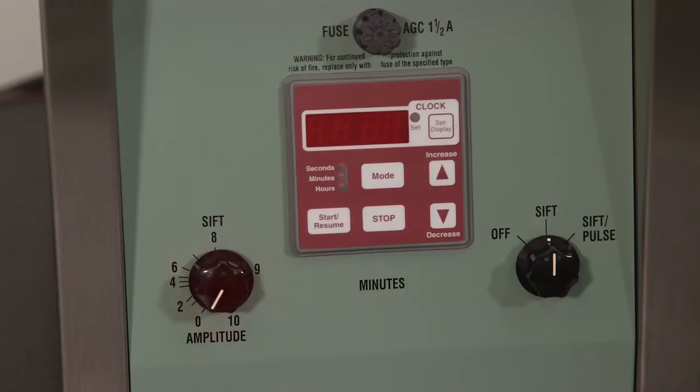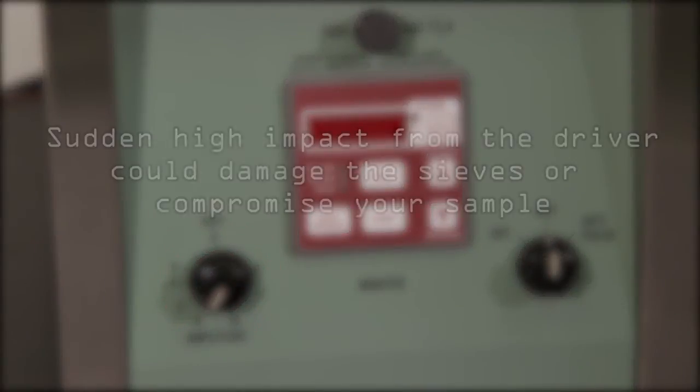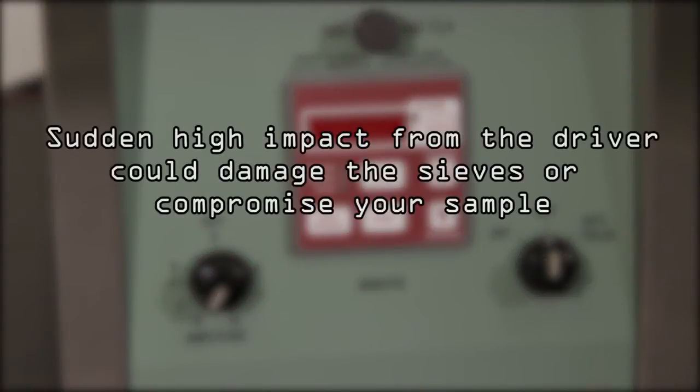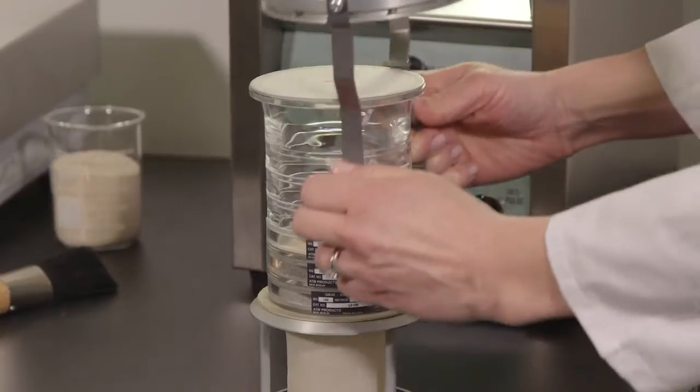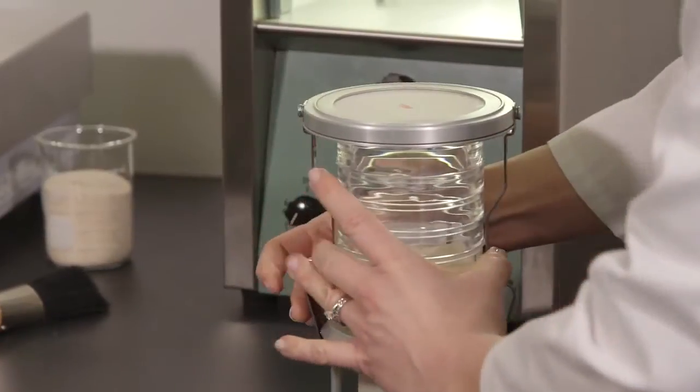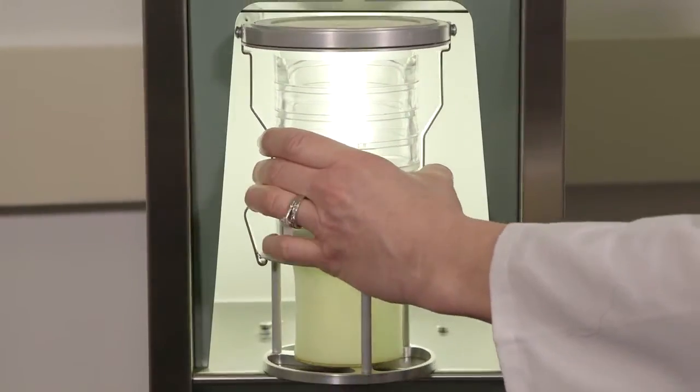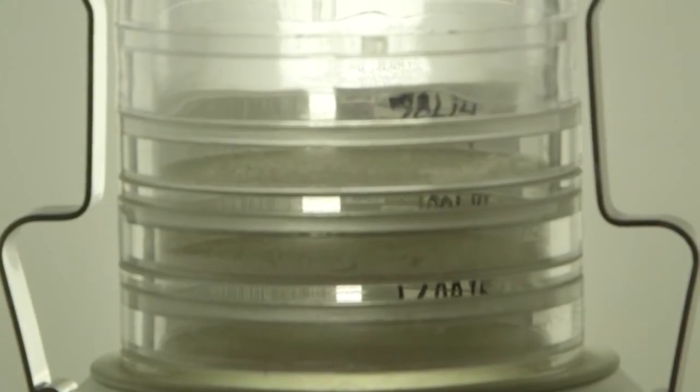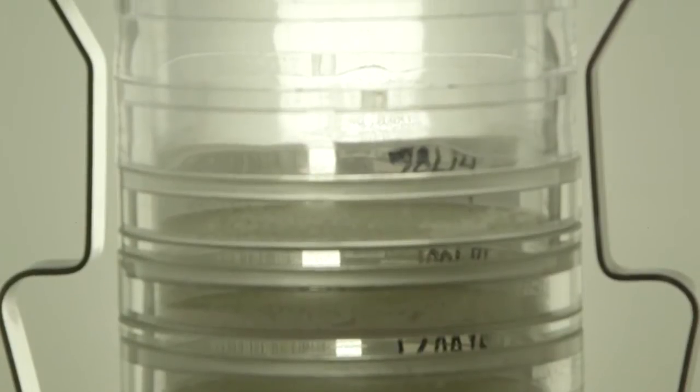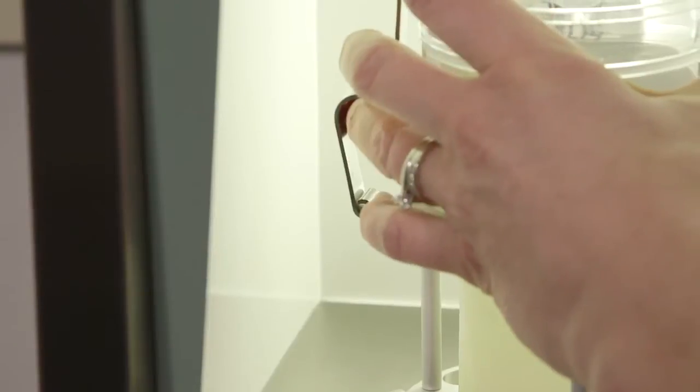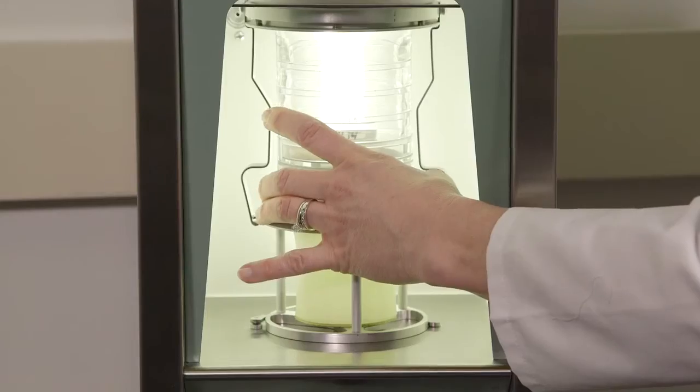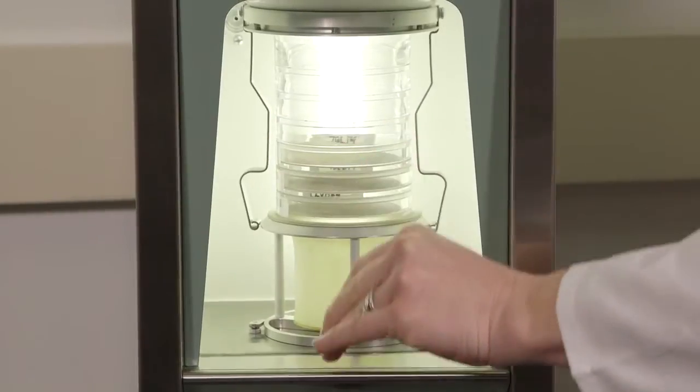Make sure the amplitude is set to zero and the timer is in clock mode or blank before starting. Sudden high impact from the driver could damage the sieves or compromise your sample. With the column lock arms clipped down, slide the test stack into the test chamber. Be sure to orient the stack in such a way that will allow for clear viewing of the sample. Release the column lock arms to form a tight seal. Lower the chamber door.